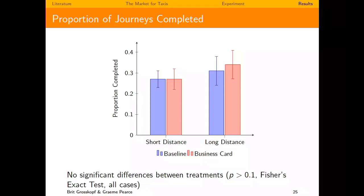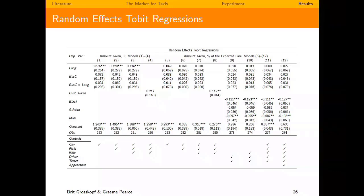Using random effects Tobit regressions: on the left-hand side is the amount given — clearly more in the long-distance treatment. When looking at percentage of expected fare, as expected there's no difference between the two distances. Importantly, our black testers tend not to be taken longer — they don't seem to be recipients of other-regarding behavior. Females were taken a little bit longer in our study.